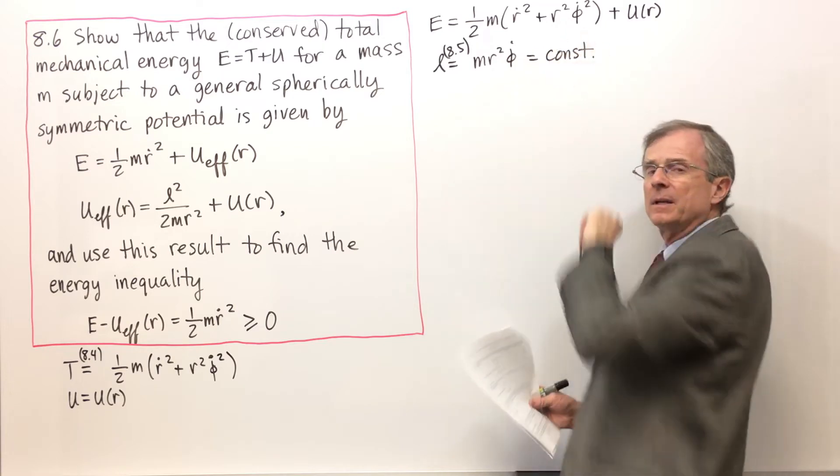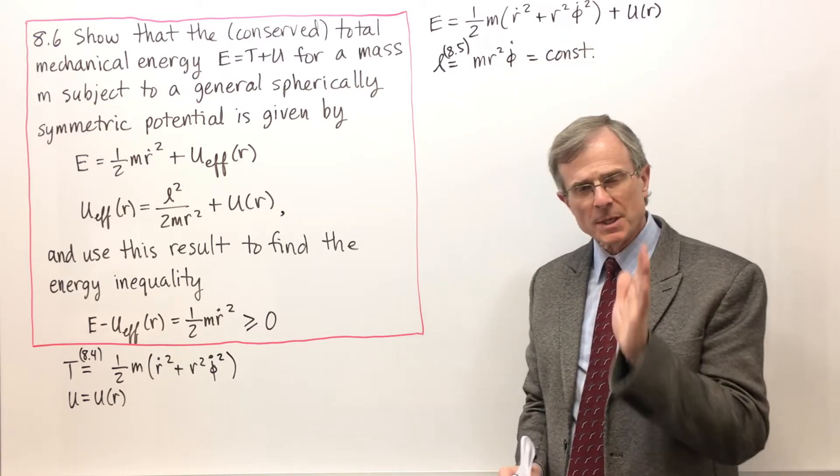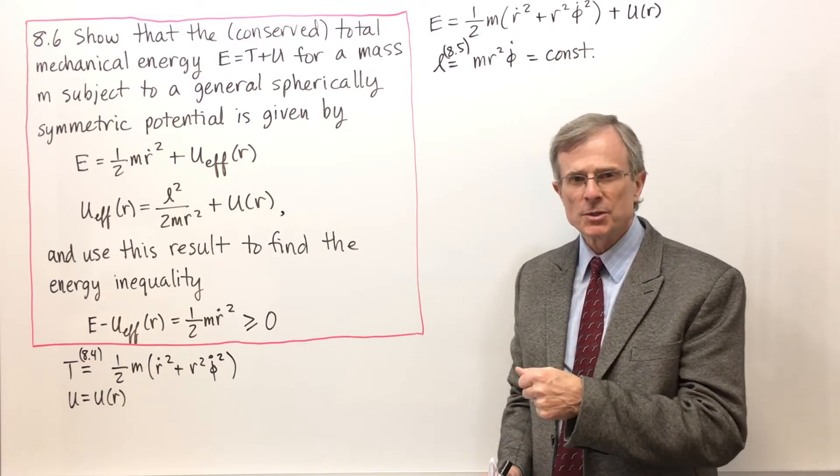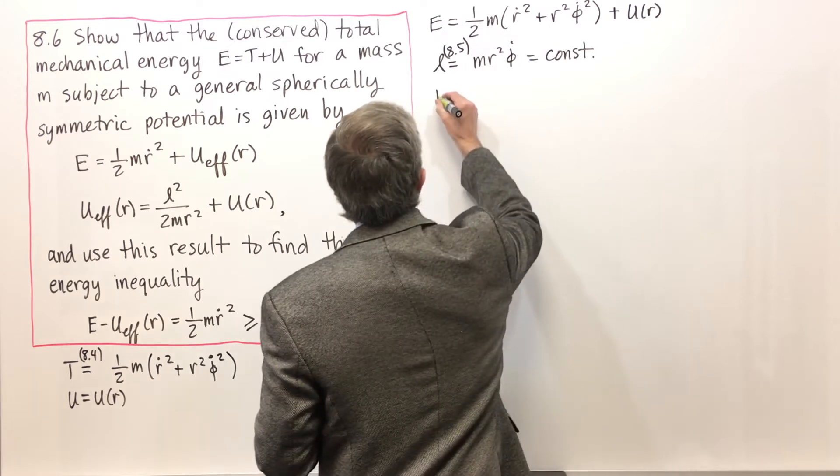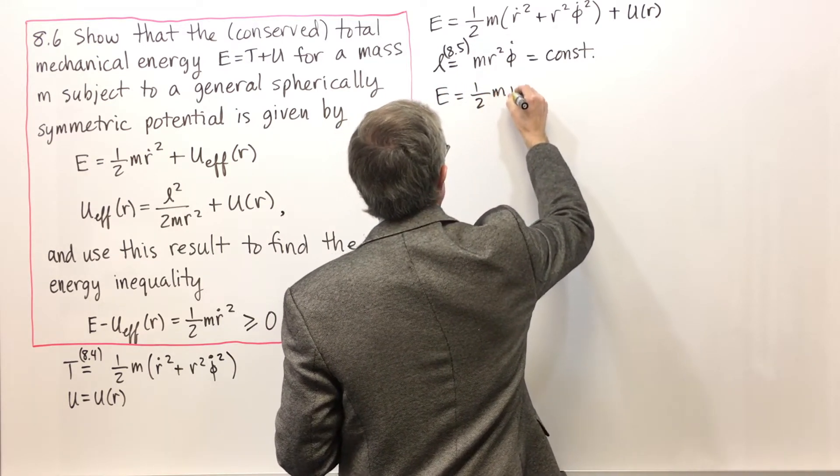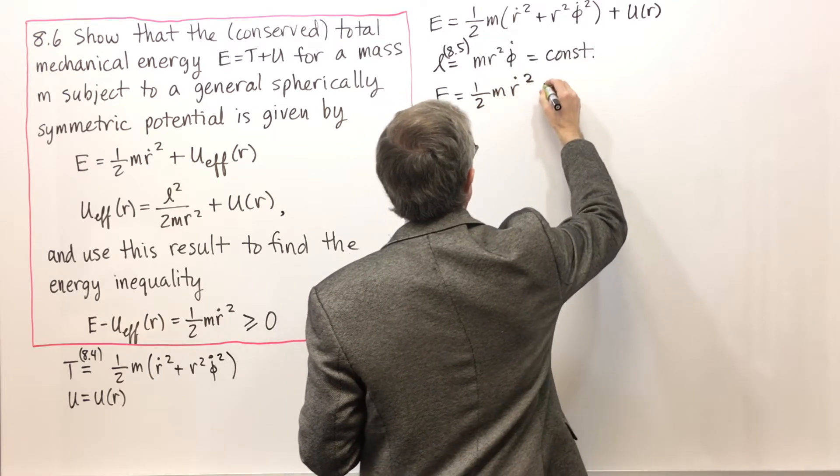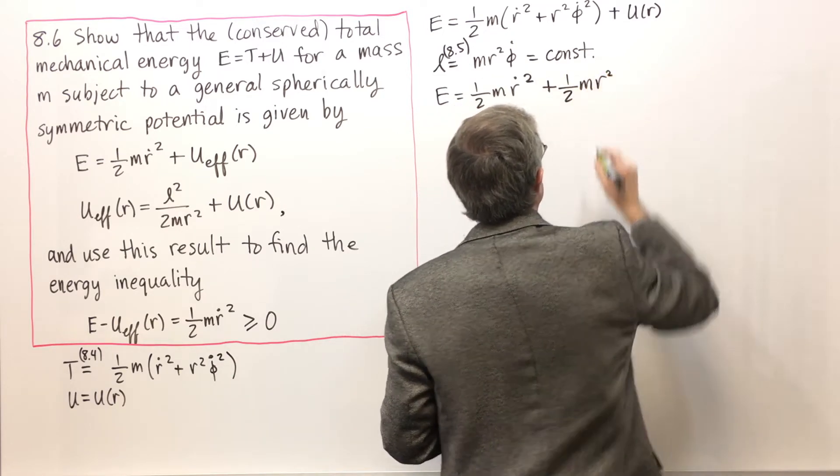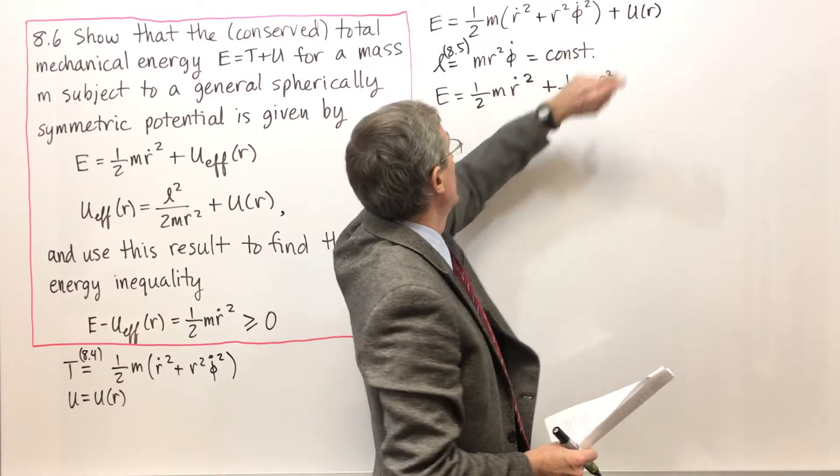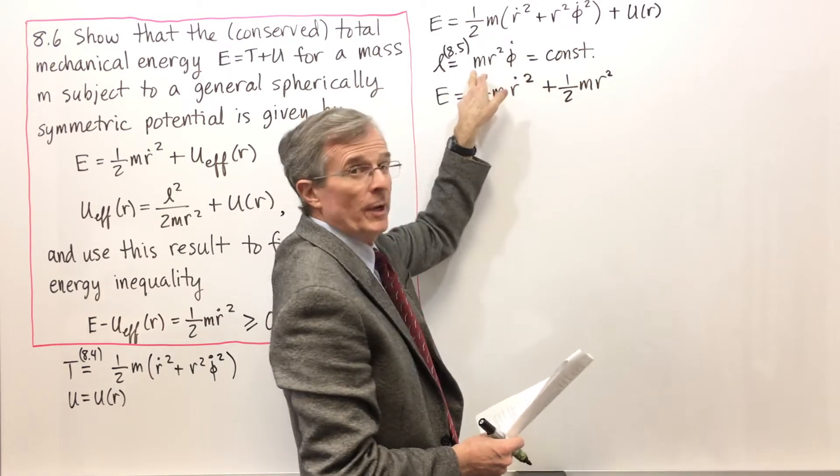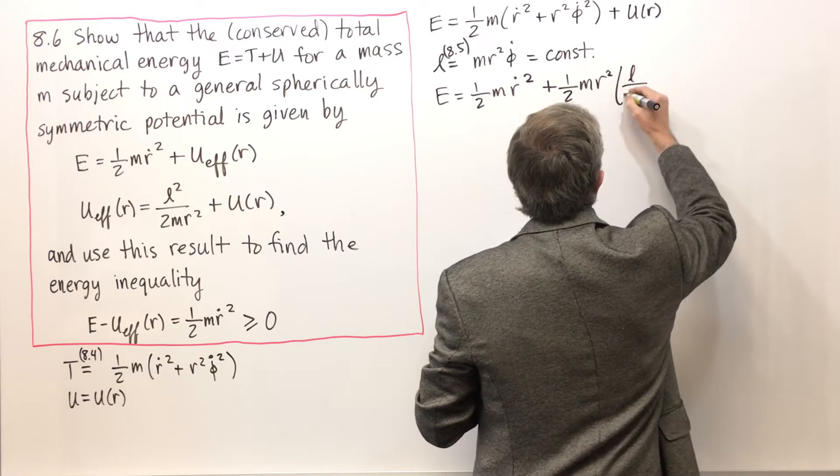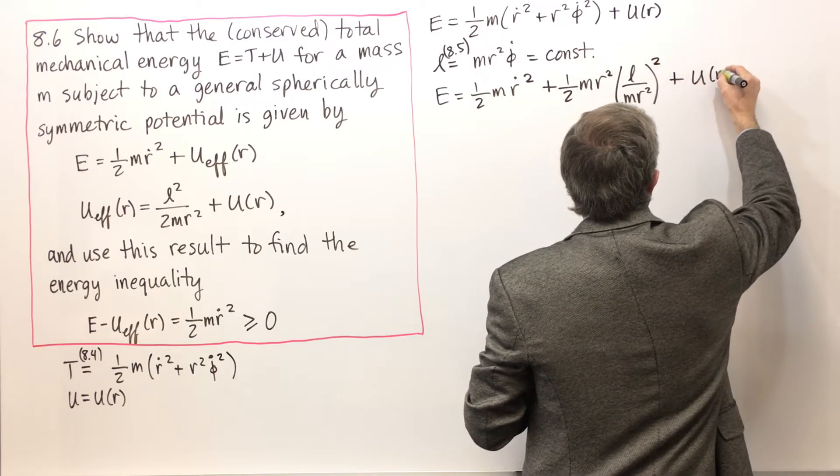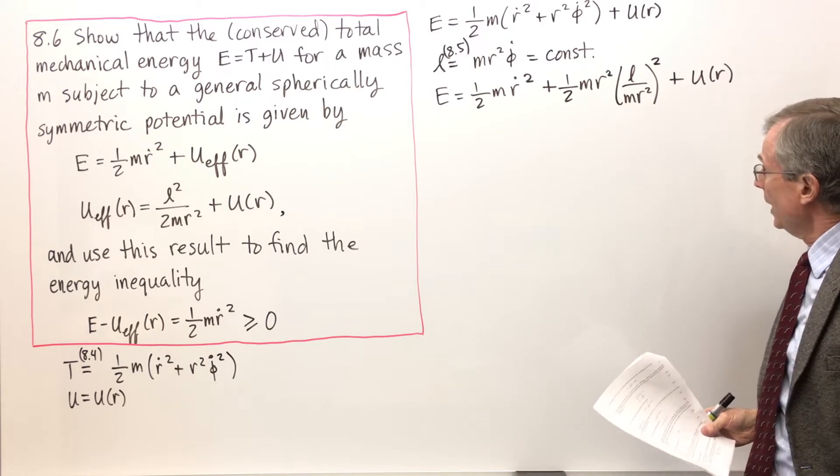Phi dot is L over m r squared. And we're going to substitute that in here for E. I warned you that substituting it into the Lagrangian isn't legal before you take the partial derivatives. But substituting it into the energy now is legal. One-half m r squared times phi dot squared. And phi dot is going to be L over m r squared, and then we have to square that, then we add U of R to the end.